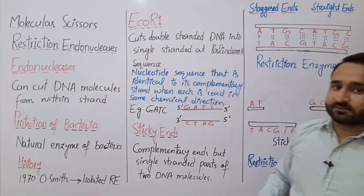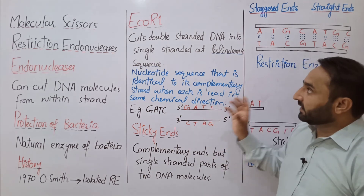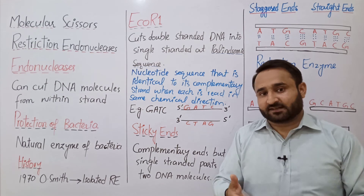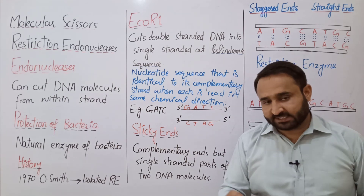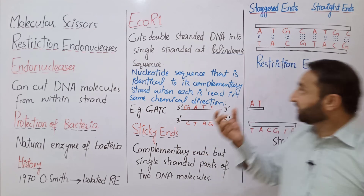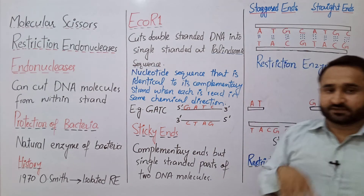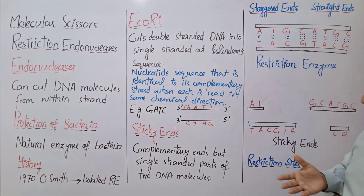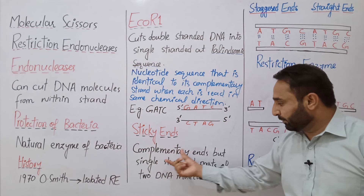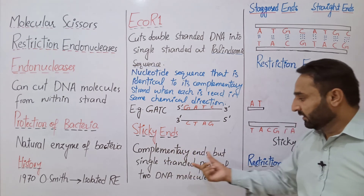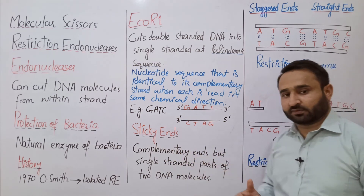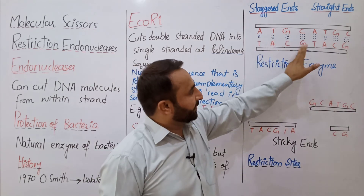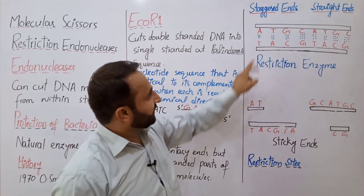EcoRI is a restriction endonuclease that cuts the double-stranded DNA at the palindromic sequence into sticky ends. There are two types of ends: sticky ends, also called staggered ends, and blunt ends, also called straight ends. Sticky ends are complementary but single-stranded parts of two DNA molecules. Look at this figure — one strand and its complementary strand; the restriction endonuclease cuts in a staggered manner.